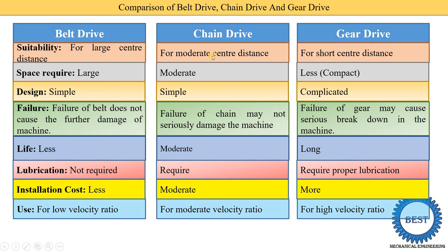To remember the various points, note that in a chain drive, all the points are moderate: center distance is moderate, space required is moderate, life is moderate, installation cost is moderate, and it is used for moderate velocity ratio. So the word 'moderate' is associated with chain drive.